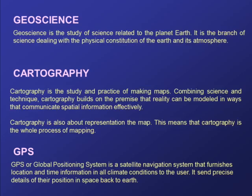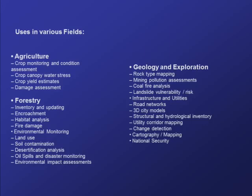GPS, or Global Positioning System, is a satellite navigation system that furnishes location and time information in all weather conditions to the users. It sends precise details of position in space back to the earth. These technical terms are commonly called joint formatting and are used in various fields such as agriculture, forestry, geology and exploration, mining, and many more.